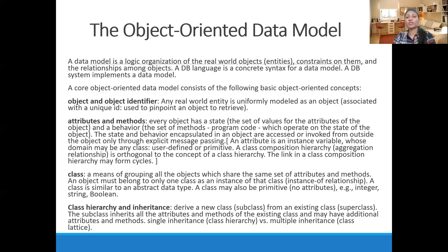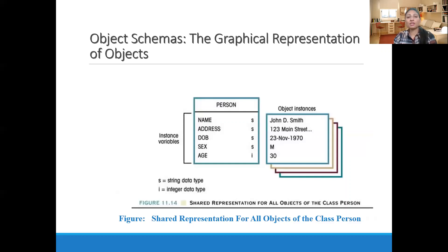Encapsulation is also a property of the object-oriented data model. Now I will show you the basic object schema. Just as in relational DBMS we have a relational schema, here we call it an object schema. For example, this is a class Person having different attributes: name, address, date of birth, gender, and age. These are the data types mentioned. These are object instances — for example, name is John, address is 123 Main Street, DOB is 23rd, gender is male, and age is 30.